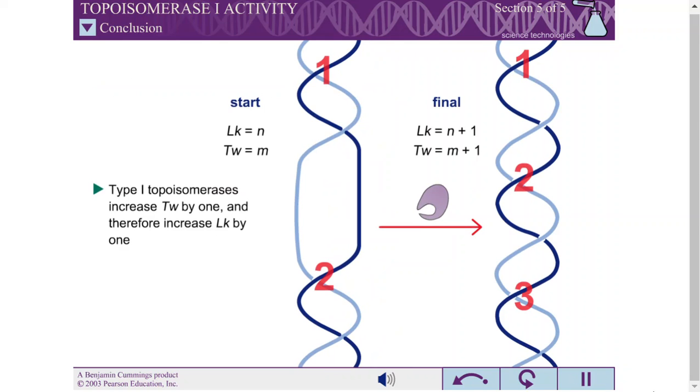Overall, the reactions catalyzed by the type I topoisomerase add one twist to the DNA, increasing the linking number by one.